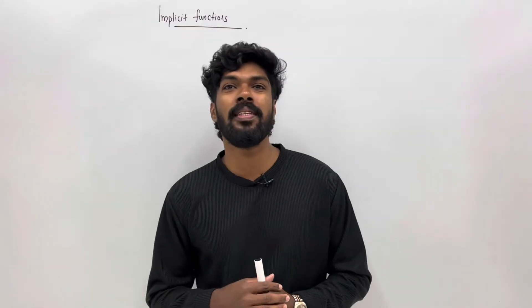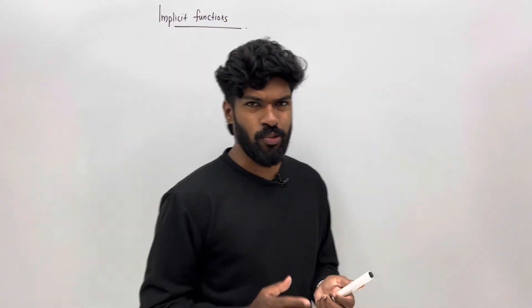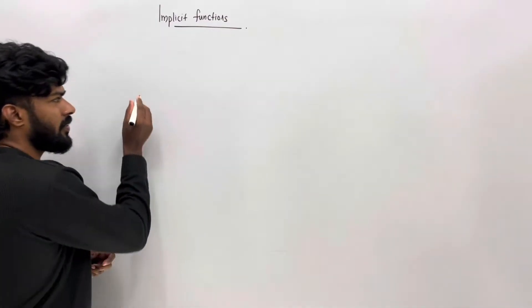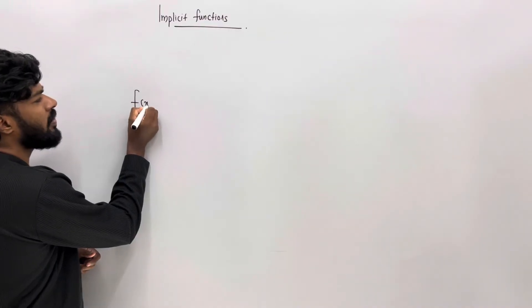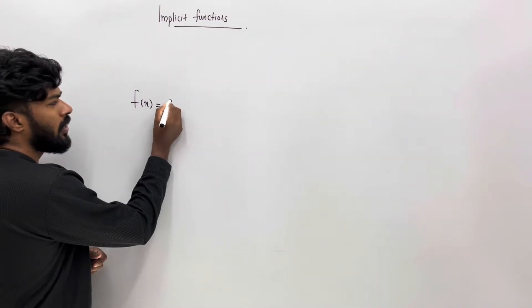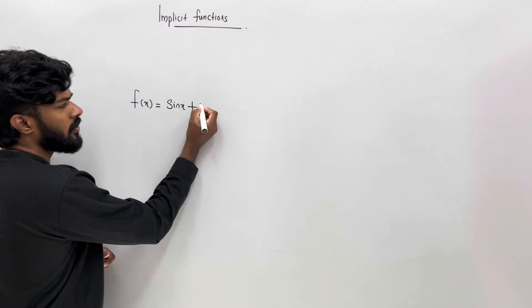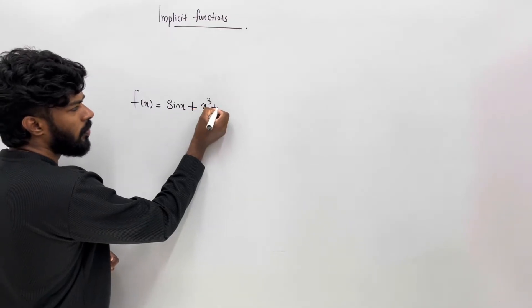Then we are going to have a sumptuous implicit function. The derivative is sin x plus x cube plus 3x.